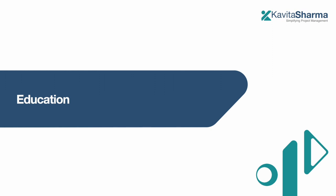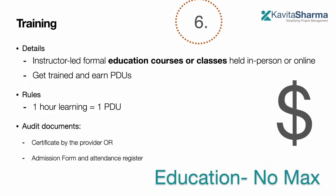Now let's move to how you can earn PDUs by learning — through education. This one can involve money. You can be part of instructor-led formal education courses or online trainings and earn PDUs. One hour of learning is one PDU. You need to show a certificate or admission form. Even if you are in a management course in college, you need to show the course details to claim the PDUs.